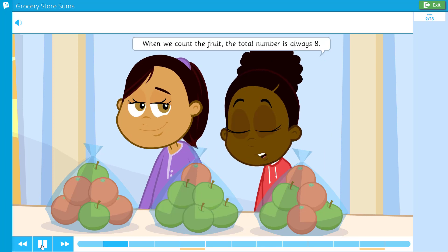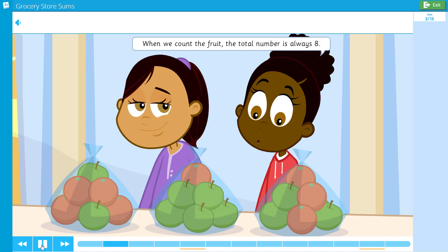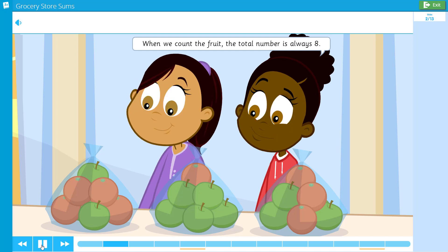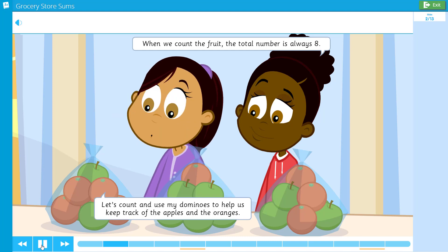True. When we count the fruit, the total number is always eight. Let's try it. Let's count and use my dominoes to help us keep track of the apples and the oranges.